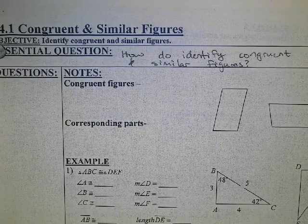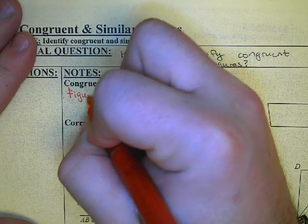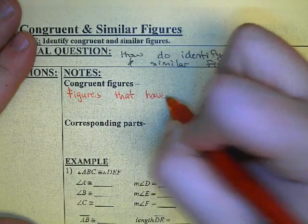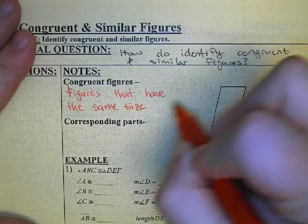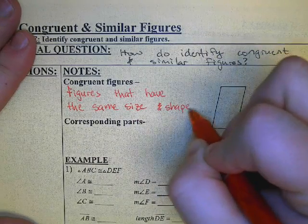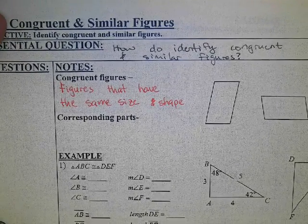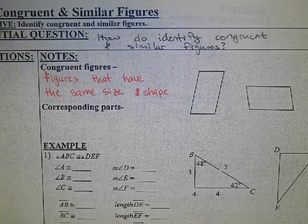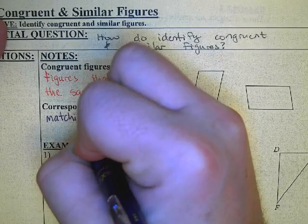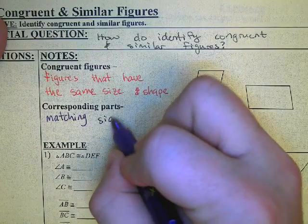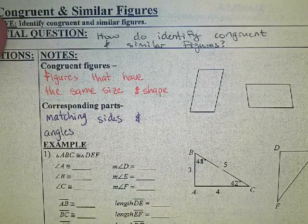Congruent figures are figures that have the same size and shape. Corresponding parts are matching sides and angles between the shapes.